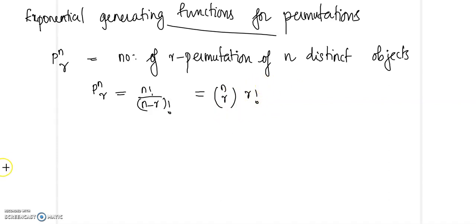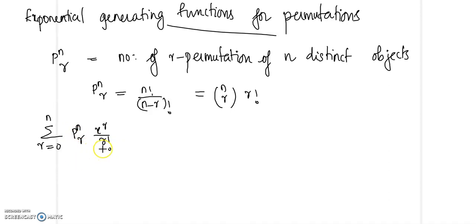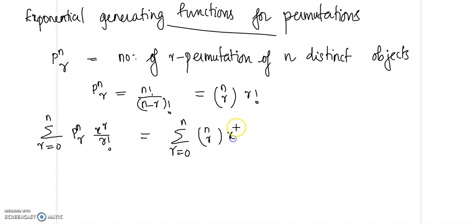Now if you look at the summation from r equal to 0 to n of P(n,r) times x^r divided by r factorial, then P(n,r) divided by r factorial equals nCr. So this becomes the series summation from r equal to 0 to n of nCr times x^r, which is the binomial expansion.